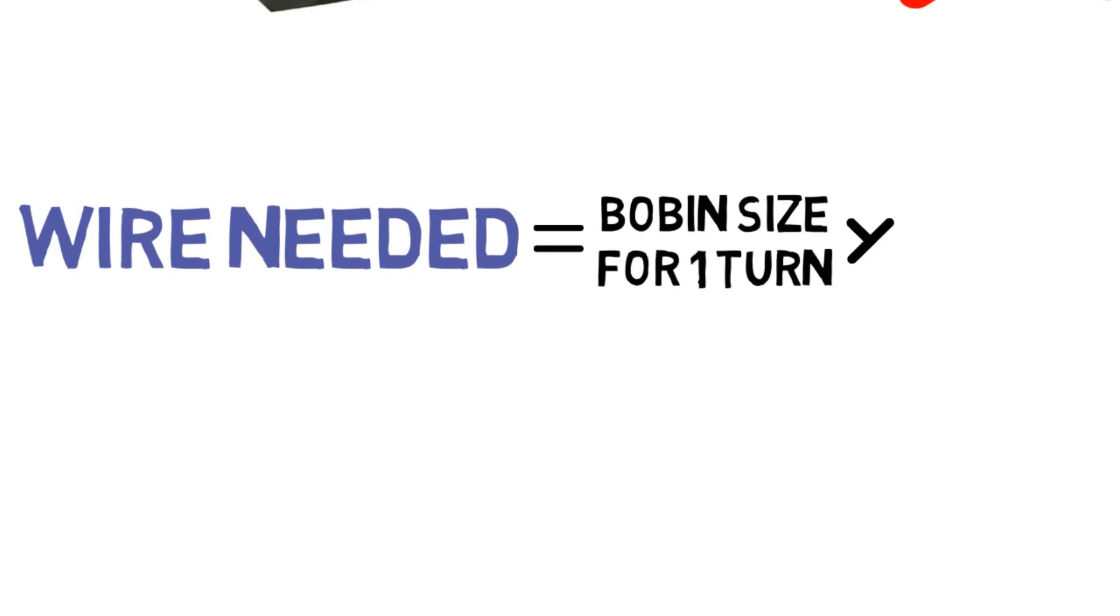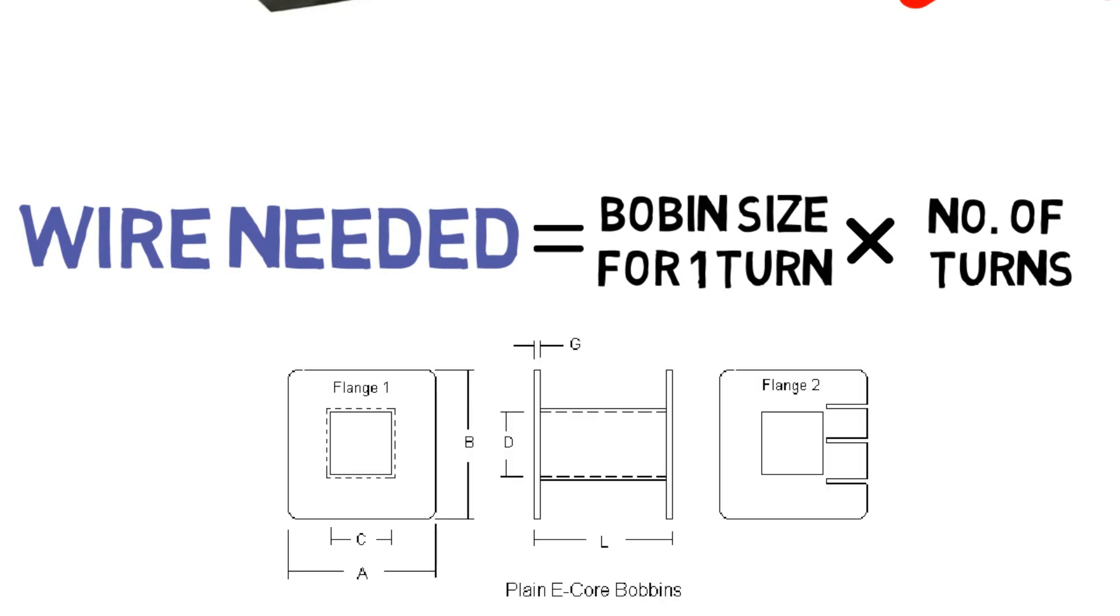After that we have to find out the length of the wire to be needed for winding. It is dependent on the bobbin size for one turn multiplied by number of turns. After finding all these values we can wind the wire around core.